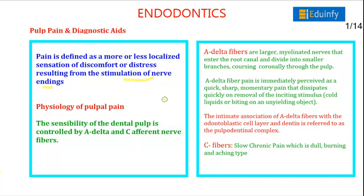Dental pulp sensation is controlled by A-delta fibers and C nerve fibers. A-delta fibers are larger myelinated nerves that enter the root canal and divide into smaller branches. A-delta fibers receive pain that is quick, sharp, and momentary, and this dissipates quickly on removal of the stimulus. The association of A-delta fibers with the odontoblastic cell layer is referred to as the pulpodentinal complex. C fibers mediate sensation of slow, chronic pain, which is dull, burning, and aching type.